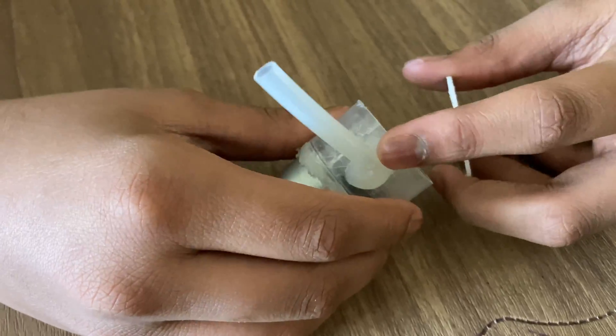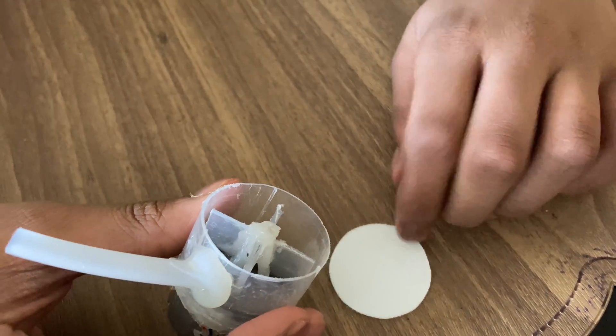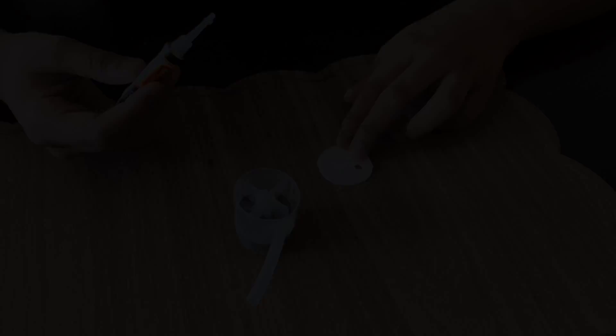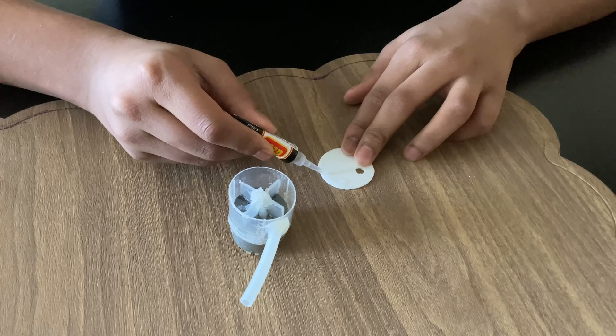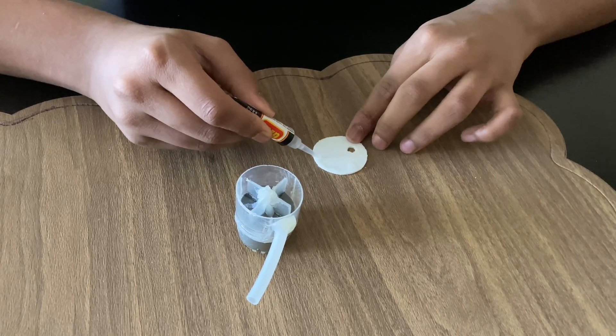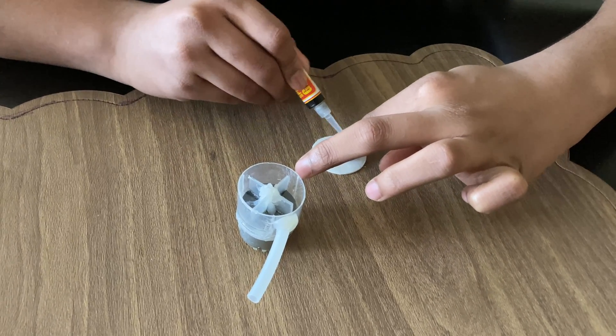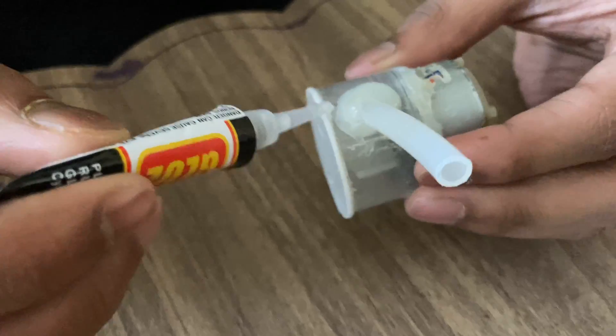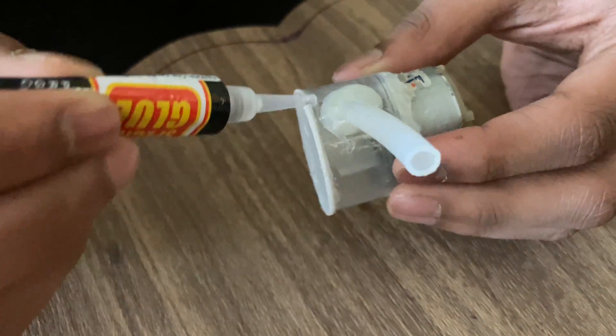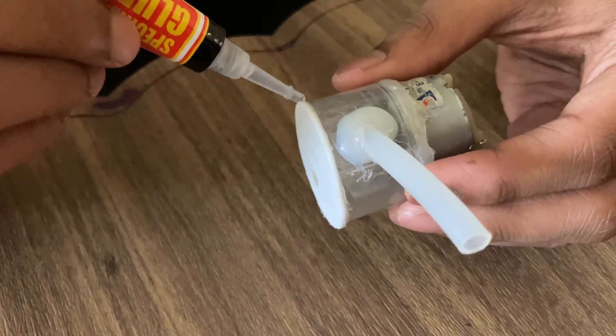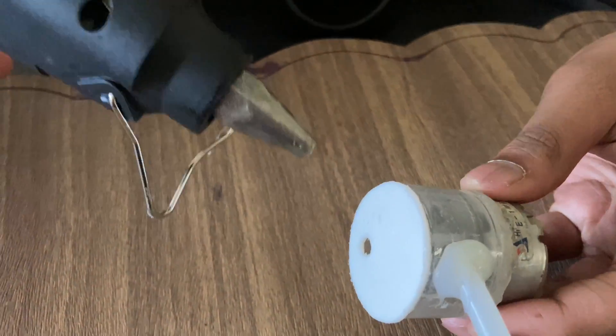So I've stuck it. Now I need to stick this plastic here, but before that you need to make a hole so the water can be sucked in. Okay, now I'm going to stick it with super glue. I want to make it airtight, so for that I'm using the glue gun.